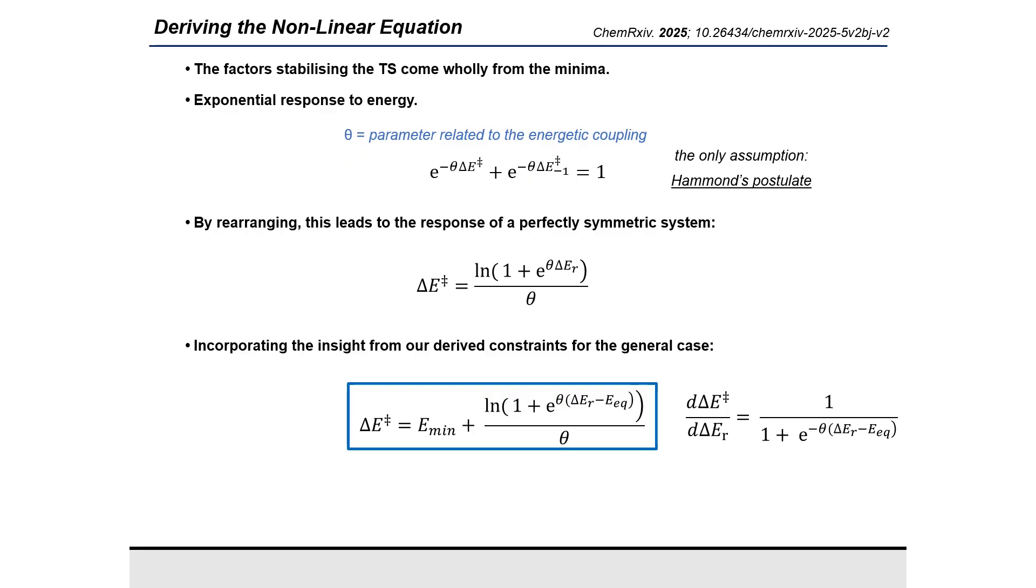And because we know that the reverse barrier can be expressed as forward barrier minus reaction energy, we can re-express this and reach the equation of a perfectly symmetric system.